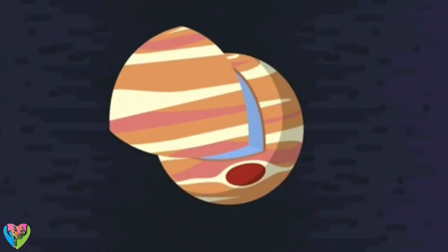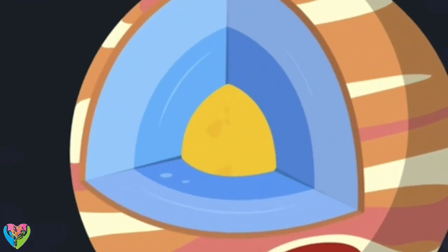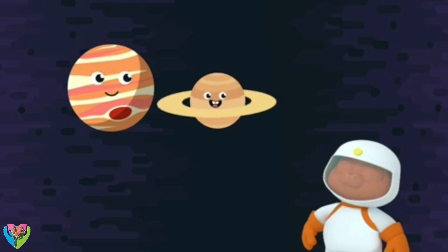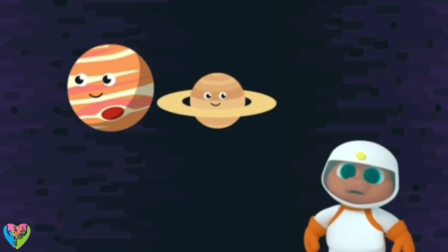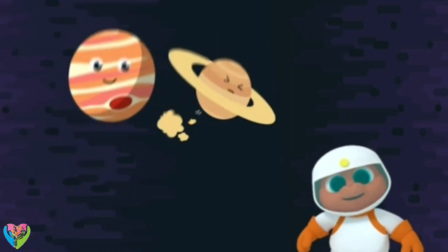What's also special about Jupiter is that it has a solid core, and the rest of it is made up of gas. Jupiter and Saturn are both gas planets. Gas planets? They could have a competition to see who's the smelliest.